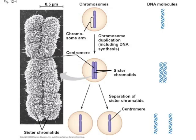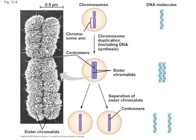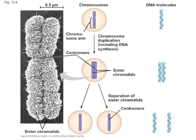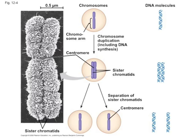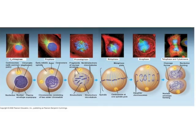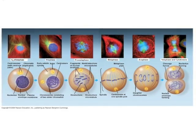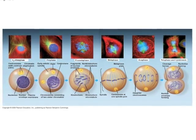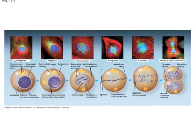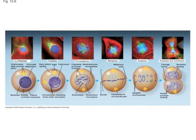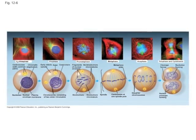The chromosomes consist of two sister chromatids, which are joined together at their centromeres, which also have kinetochores attached to them. Mitosis consists of four phases: prophase, metaphase, anaphase, and telophase.